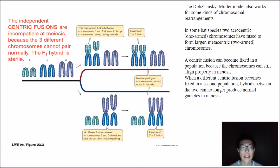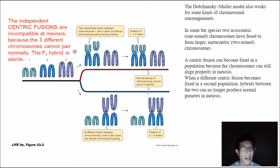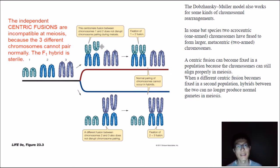The Dobzhansky-Muller model can also apply to other situations such as chromosomal rearrangements. For example, you have these chromosomes originally, and over time chromosomal fusion occurs where chromosomes one and two fuse together. If this centromere fusion does not disrupt chromosomal pairing during meiosis, the fusion of chromosomes one and two becomes fixed in this population.